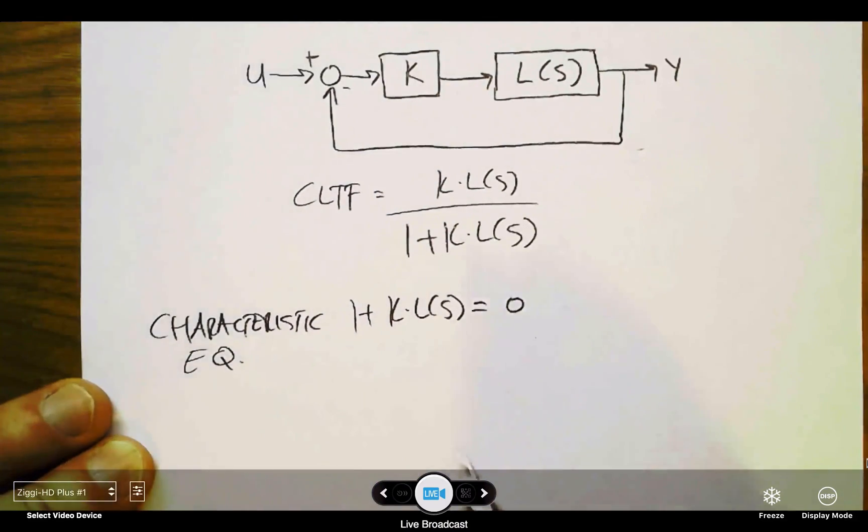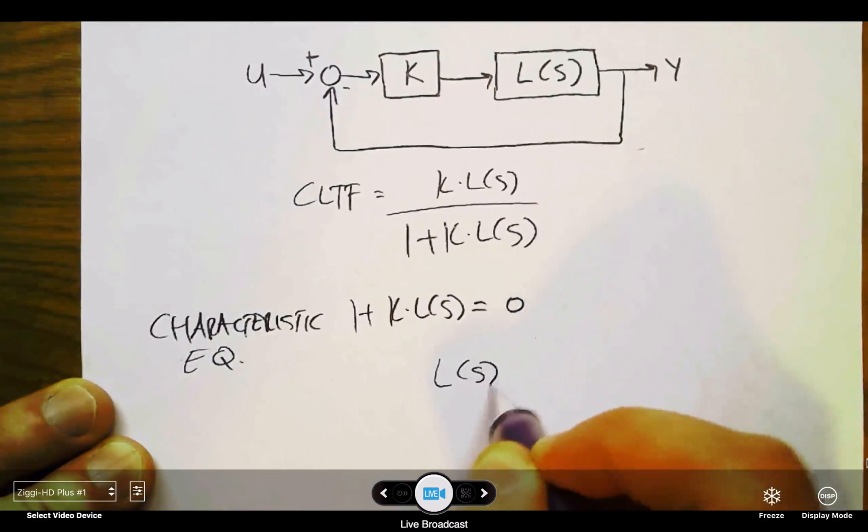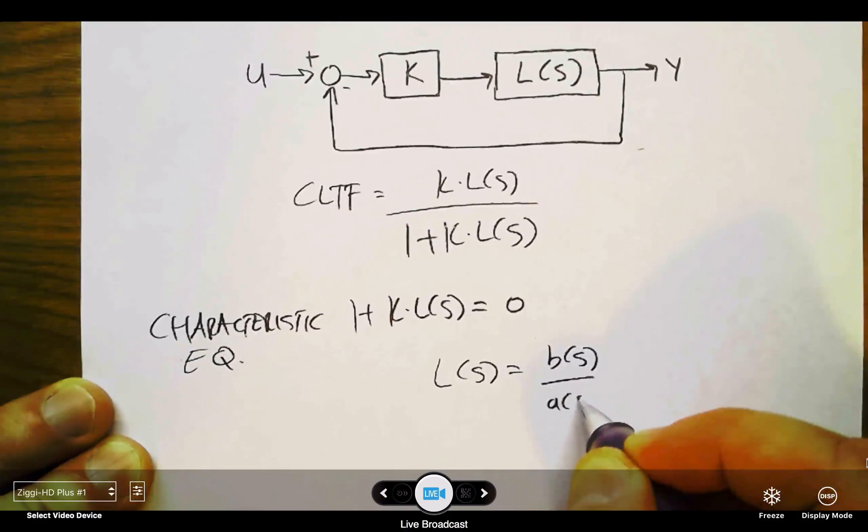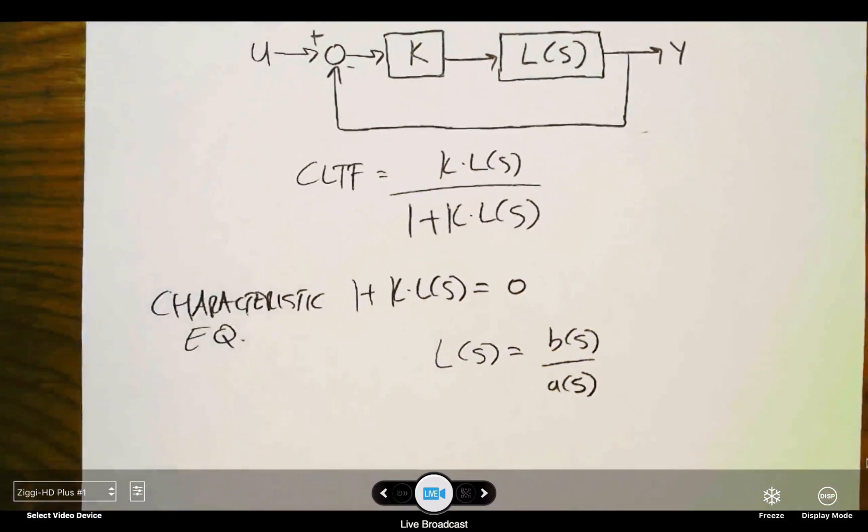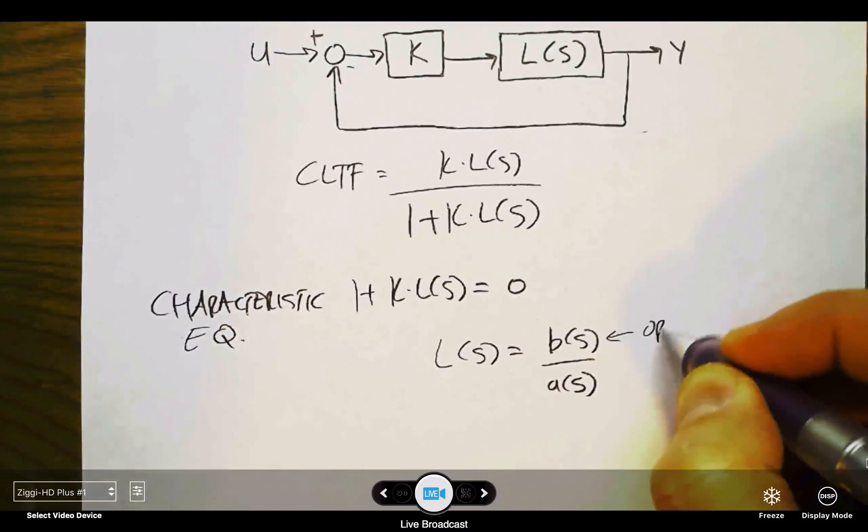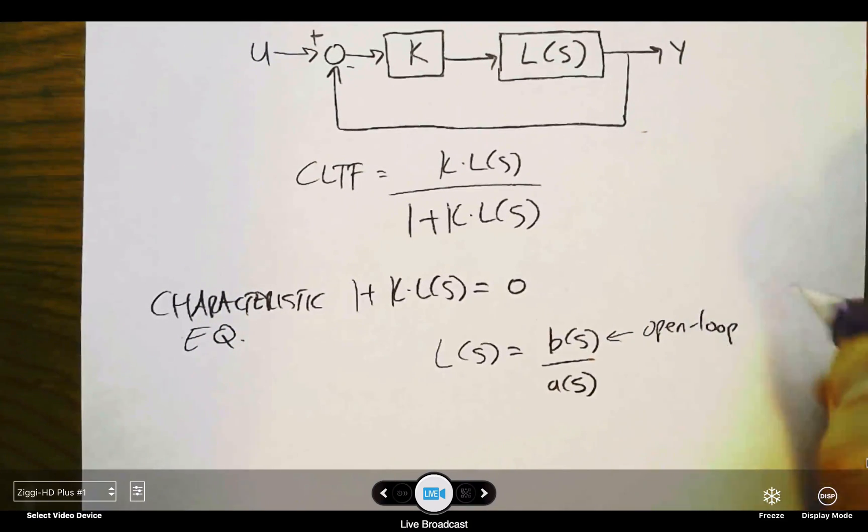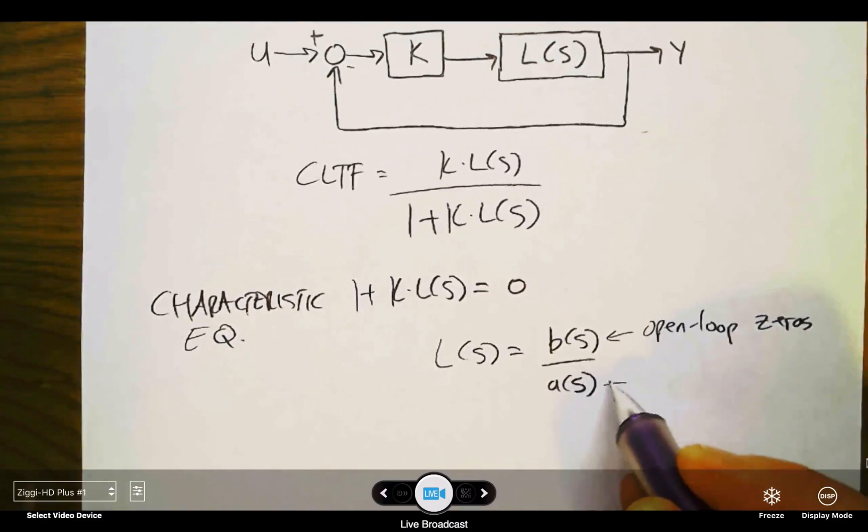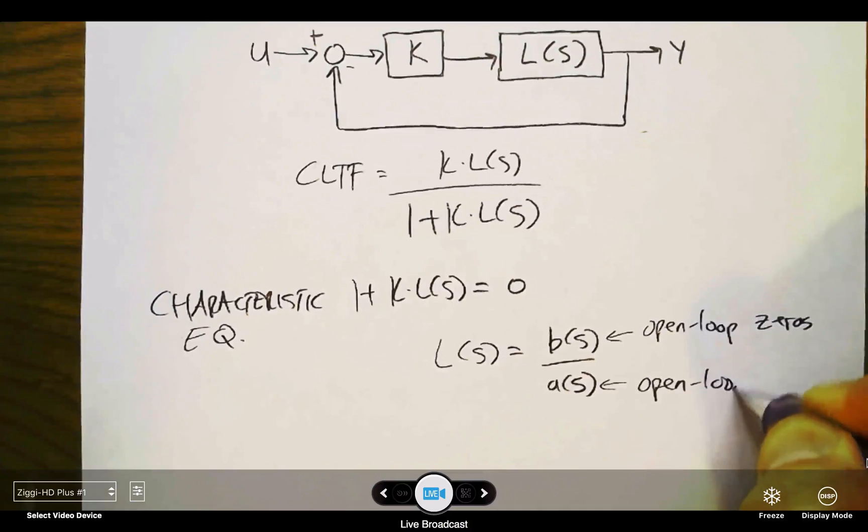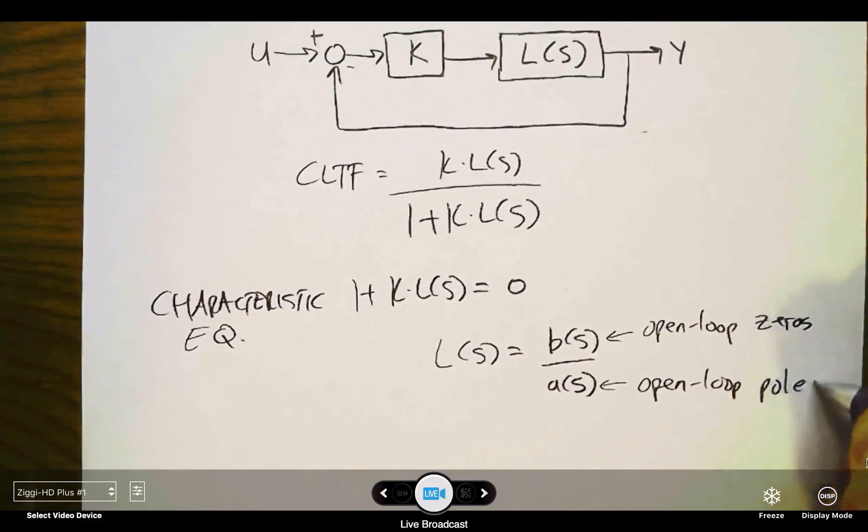With that in mind, let's rewrite our loop transfer function L as b(s) over a(s). These are just polynomials. The numerator, the roots of this would give me the open-loop zeros if I set b(s) equal to zero. And the roots of a(s) equal to zero would give me the open-loop poles.